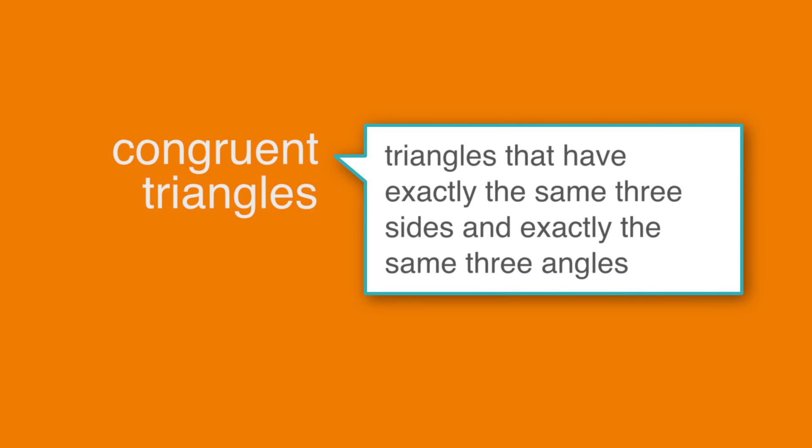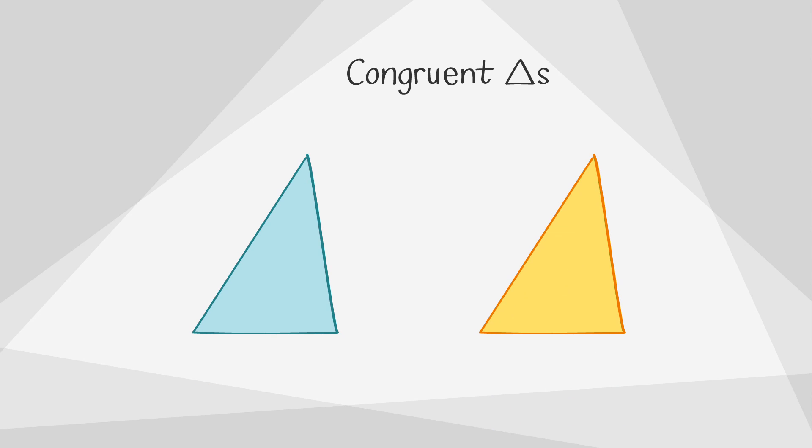Now that we have mastered finding the perimeter let's talk about congruent triangles. First of all congruent means equal. So congruent triangles have exactly the same three sides and exactly the same three angles. Congruent triangles are like similar triangles because both triangles have the same angles. However since they're exactly the same they also have the same side lengths.